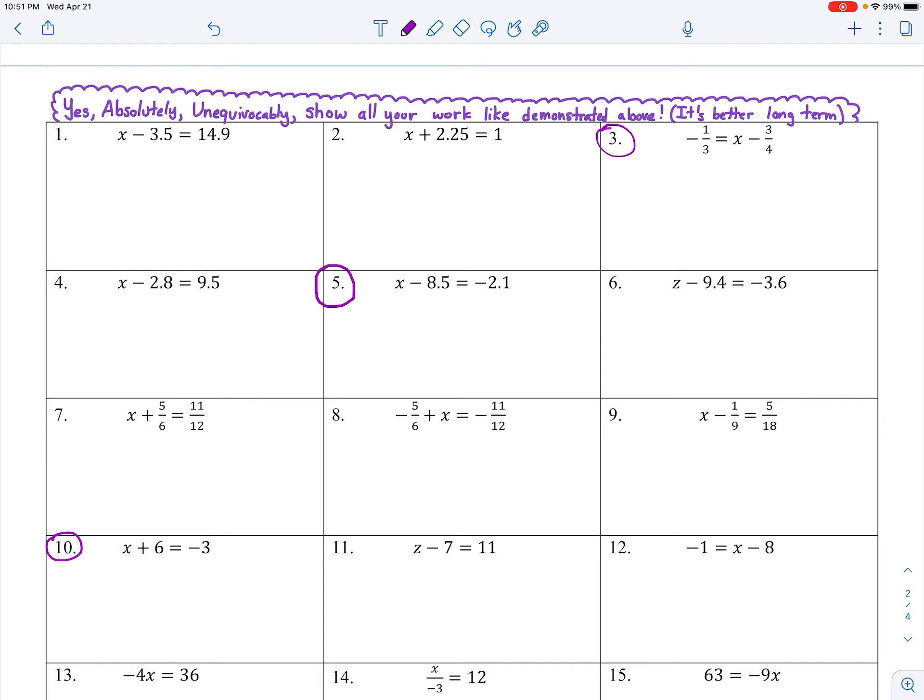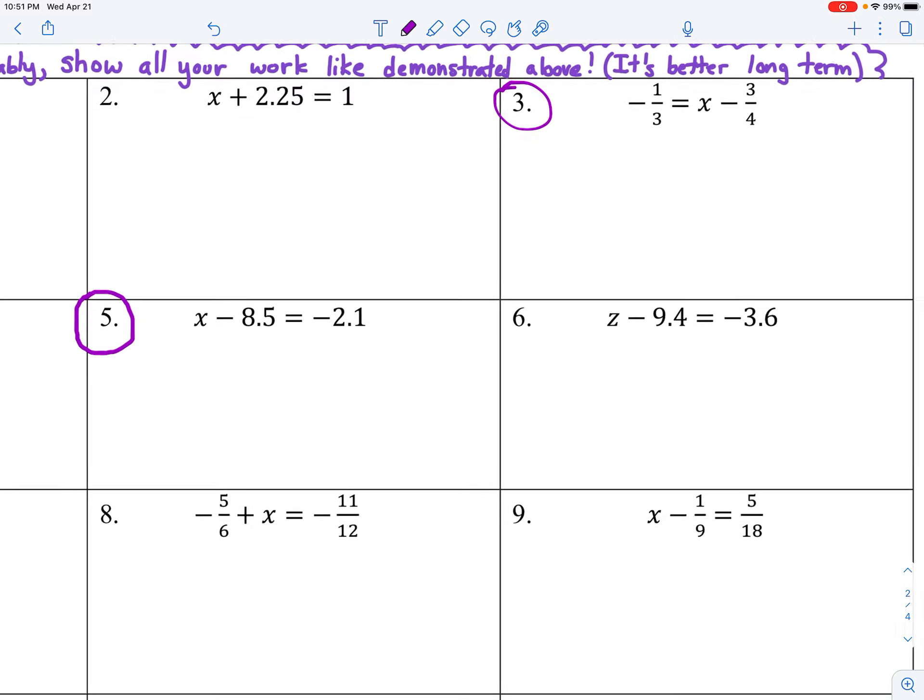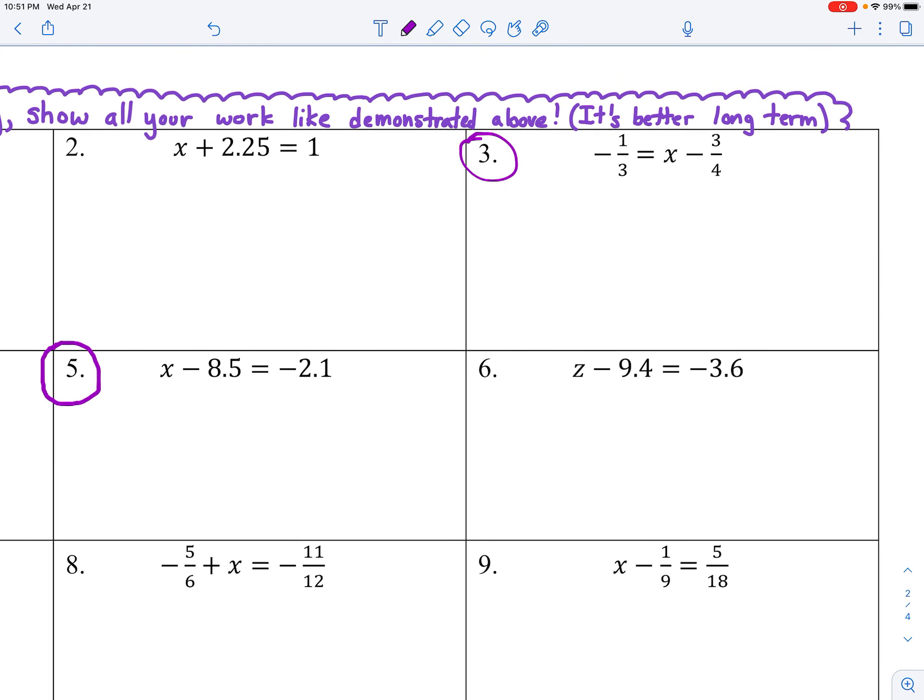I'll start with number three. Negative one-third equals x minus three-fourths. In order to isolate the variable x, we need to undo what was done. Three-fourths was taken away. Let's add three-fourths. And I show that by writing just below an addition of three-fourths on both sides of the equal sign. When I do that, minus three-fourths and plus three-fourths on the right side cancel. That's my goal.